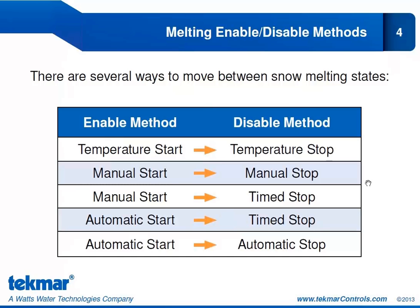There are several ways to move between snowmelting states. We can do a temperature-based start followed by a temperature-based stop. We can operate a system manually — start it manually and stop it manually. Or we could start it manually and then have a timer so that it stops after a predetermined set time. We can also look at automatic methods: an automatic start with a timed stop, and the best option — automatic start and automatic stop.